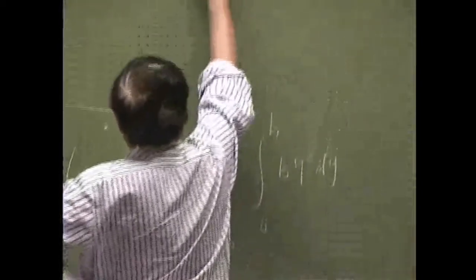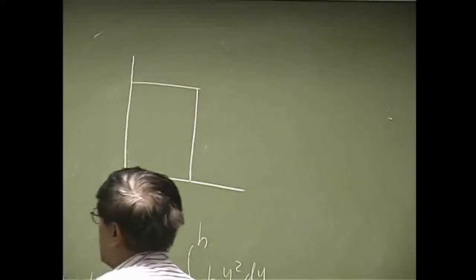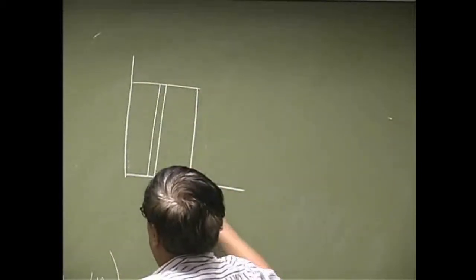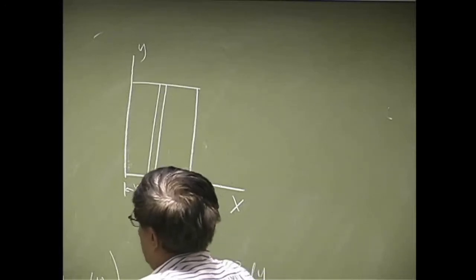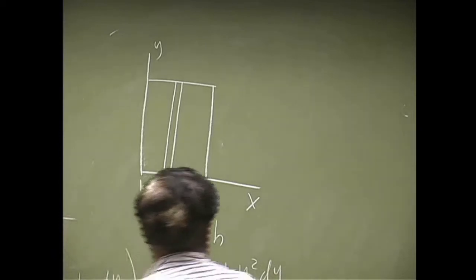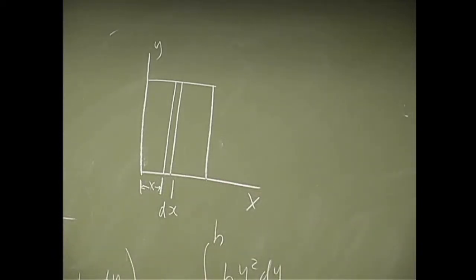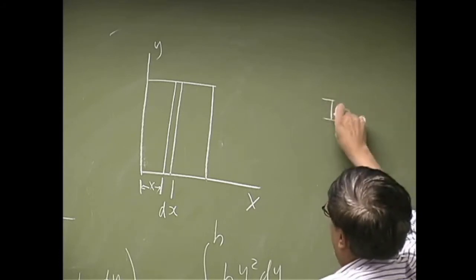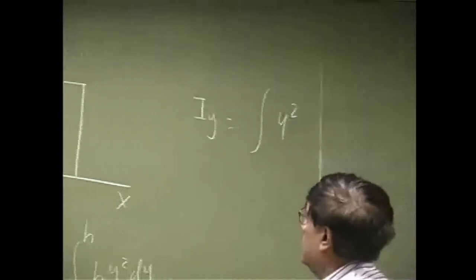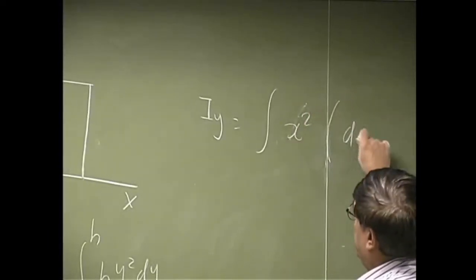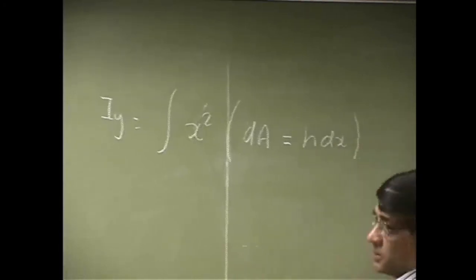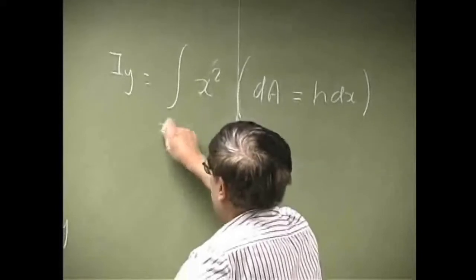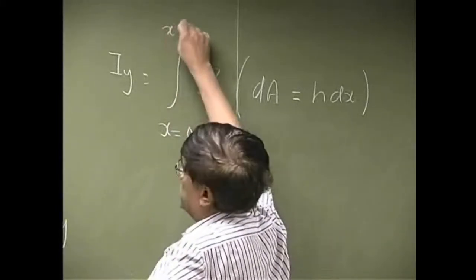Now, if I need the second one, this time I am going to take a strip that is parallel to the y-axis at a distance of x with the thickness as dx. So, Iy would be x squared, then dA would be the total height, which is h. The thickness is dx, and the limit is going to go from x equals 0 all the way up to b.